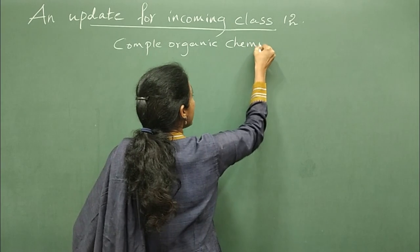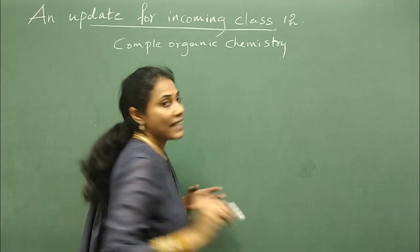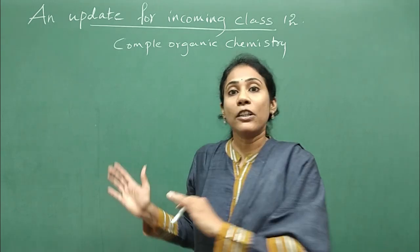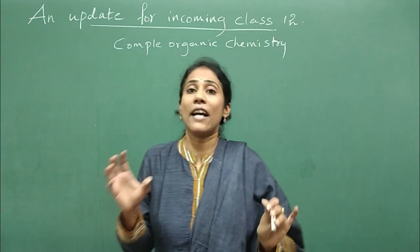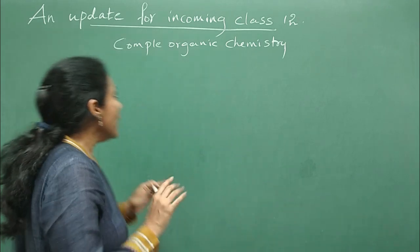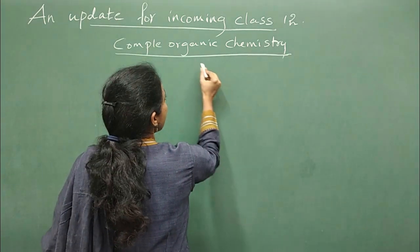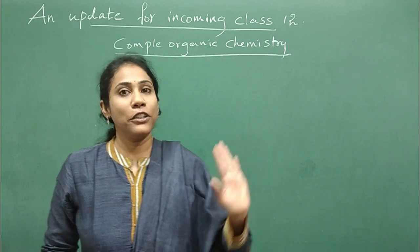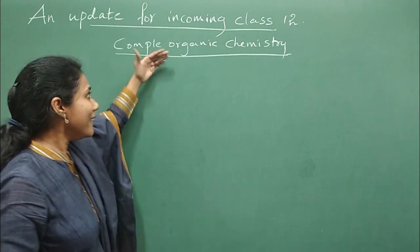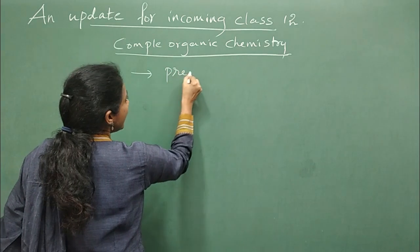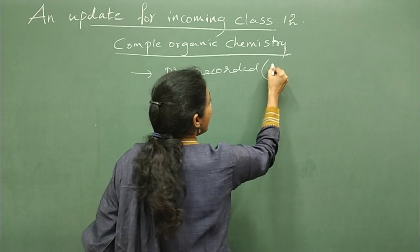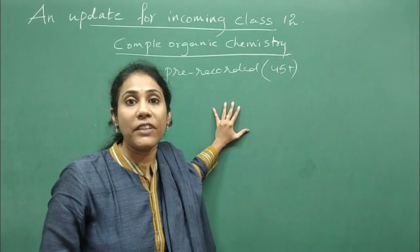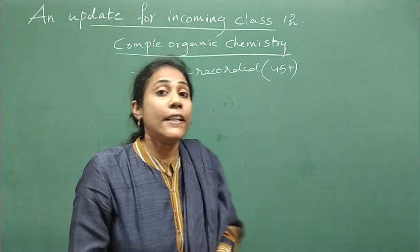We know organic chemistry is a very vast syllabus in class 12 — almost 7 chapters out of 16 are organic chemistry, and the complete part 2 textbook is organic chemistry. This is the branch most students find difficult. So I have designed this complete organic chemistry course for class 12. The right time to take the course is when you enter class 12. The course includes pre-recorded videos — almost 45 plus — where every chapter's concept is explained, because to face organic chemistry questions you must have concept clarity.